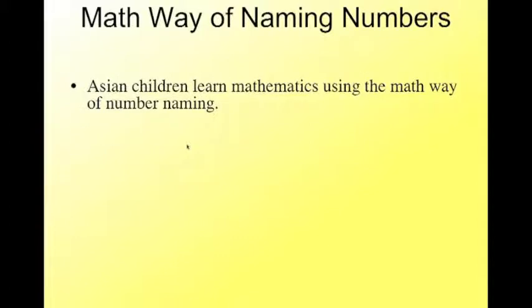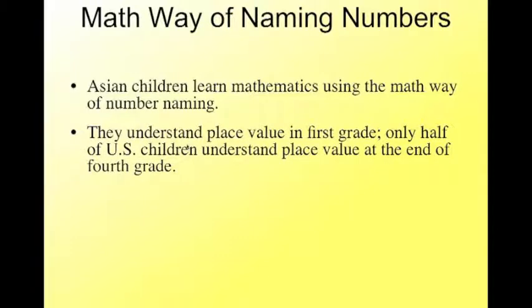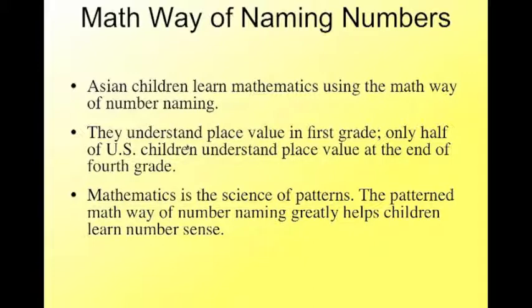The Asian children learn mathematics using the math way of number naming. They understand place value in the first grade, whereas only half of the U.S. students understand place value at the end of fourth grade. Well, good heavens, what do we do with the other half of the class that didn't figure it out? Math is a science of patterns, and the pattern math way of naming the numbers helps the children learn their number sense.